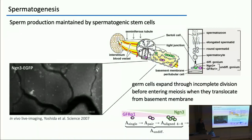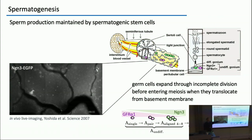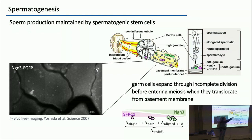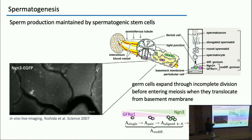Germ cell production in male mouse is maintained by stem cells, and those stem cells lie on the base of the membrane of seminiferous tubules. Those cells are a minority population, and they give rise to mitotic progenies that also live on the base of membrane. Those mitotic cells go through something like 10 rounds of division before they enter into meiosis, whereupon they translocate across tight junctions between very large Sertoli cells.